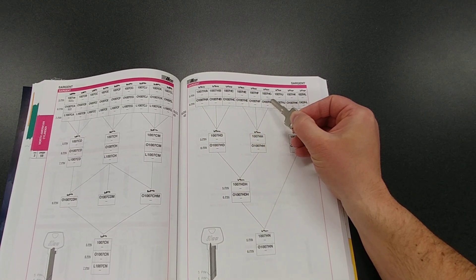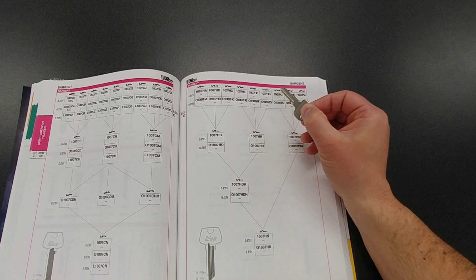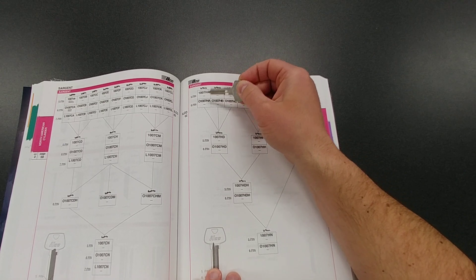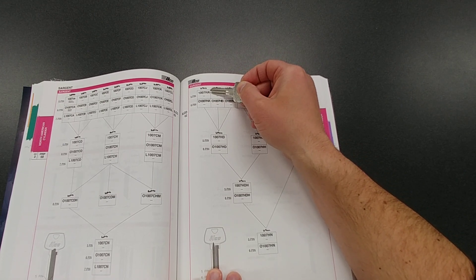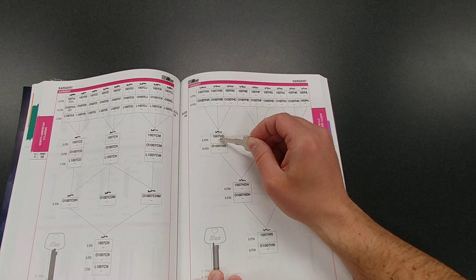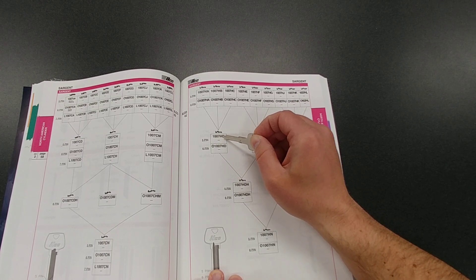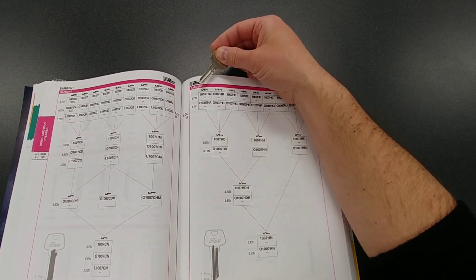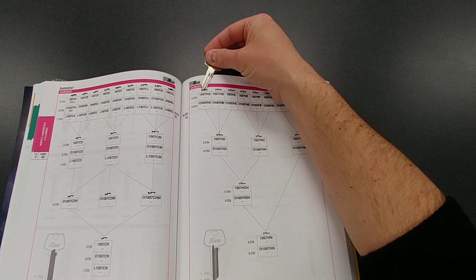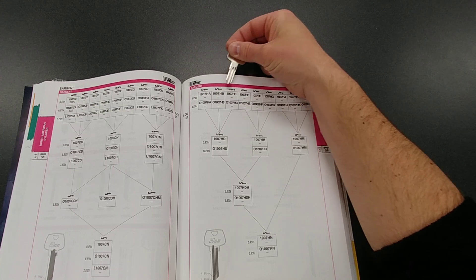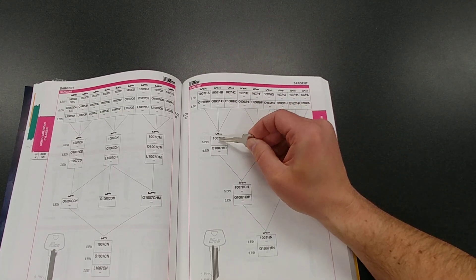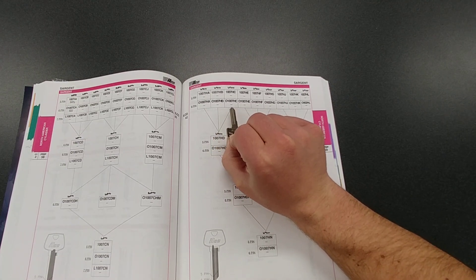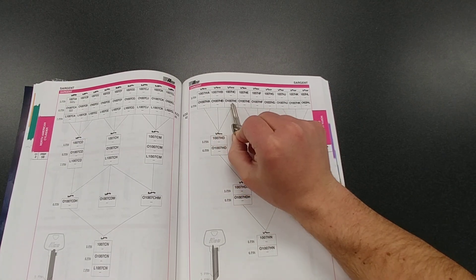So what does that mean and why is it important? I would say there's two main reasons. One, if you don't have like this 100HA key, you could use the 1007HD key if you need. Also, some guys like to get creative and they want to put like one building on this keyway, one building on this keyway, one building on this keyway, and then they're going to put the master key. They're going to use this key for the master. So these keys aren't even going to slide into each other's buildings, but this key will work for all of them.